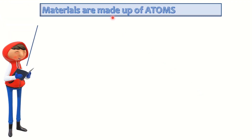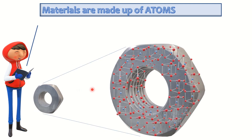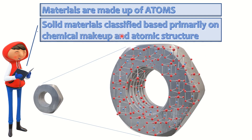Materials are made up of atoms. If you look into the material, it will be made up of atoms like this — these red and blue color balls are considered as atoms, and all atoms are arranged in a systematic manner. This is how one material looks inside. Solid materials are classified based primarily on chemical makeup and atomic structure — that means based on the chemistry of that material and the atomic structure.